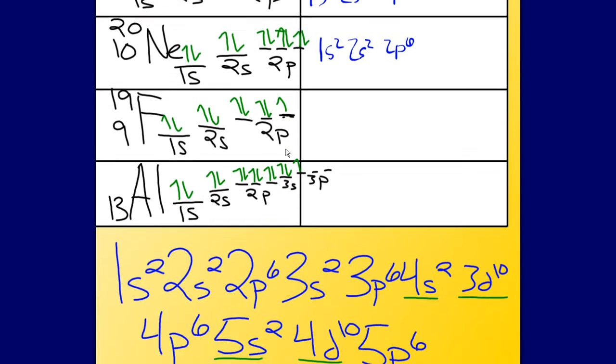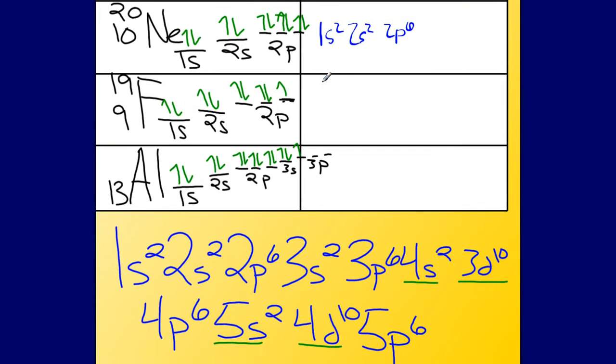Let's keep looking here at another example. Let's take a look here at fluorine. Fluorine is going to be 1s2, 2s2, 2p5, and I think you can get aluminum on your own here.